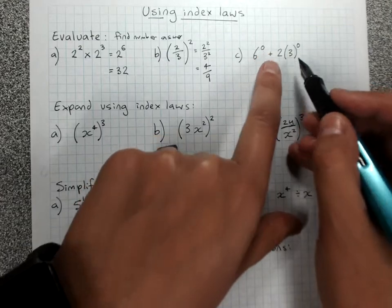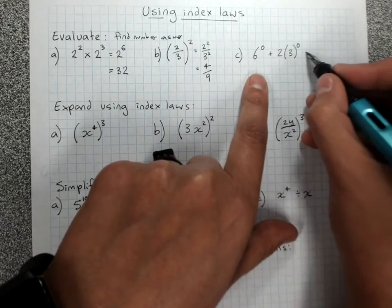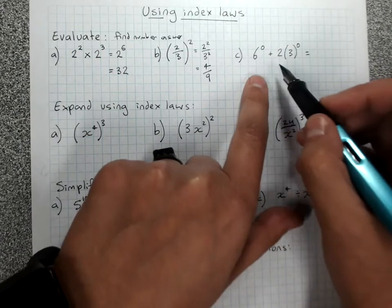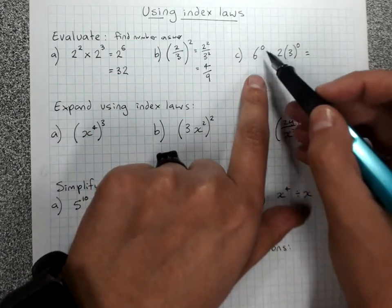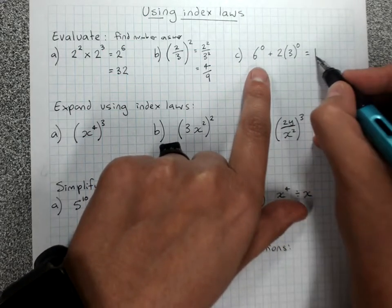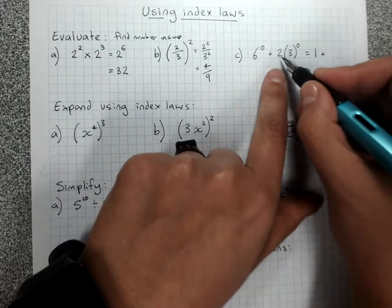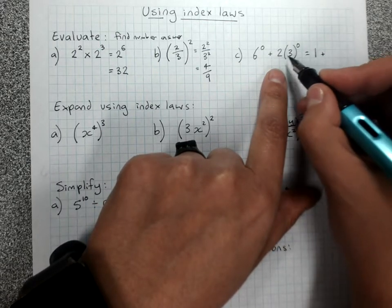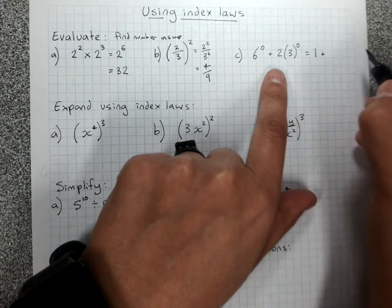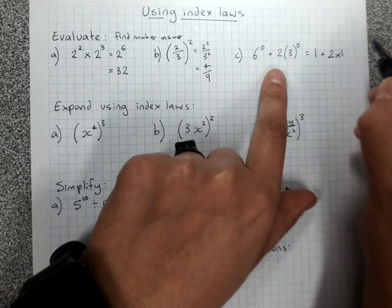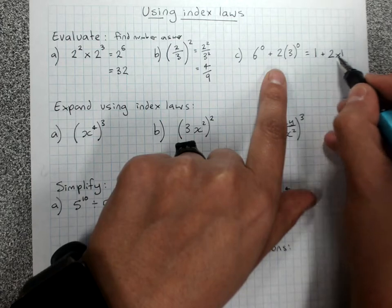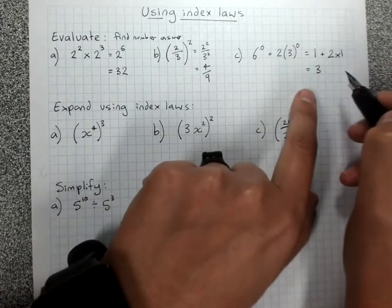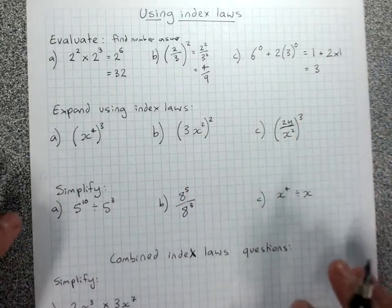When we see zero powers, that means the zero index law. Evaluate means I want a number answer, but do show working. 6 to the 0 is 1. Note that the 2 isn't in the brackets here — only the 3 is to the power 0 — so this means 2 times 1. And 1 plus 2 times 1 is 1 plus 2, which is 3. By showing working, you show that you really understand this.